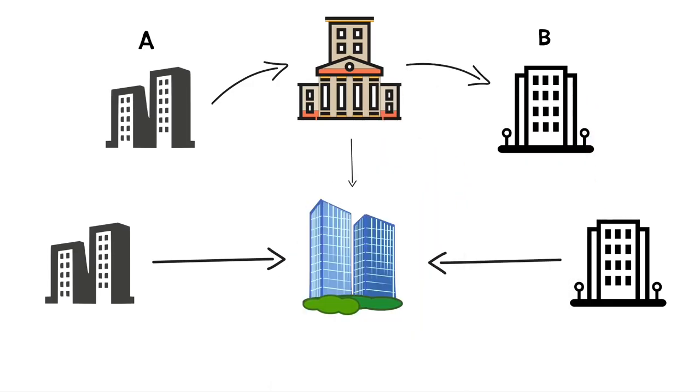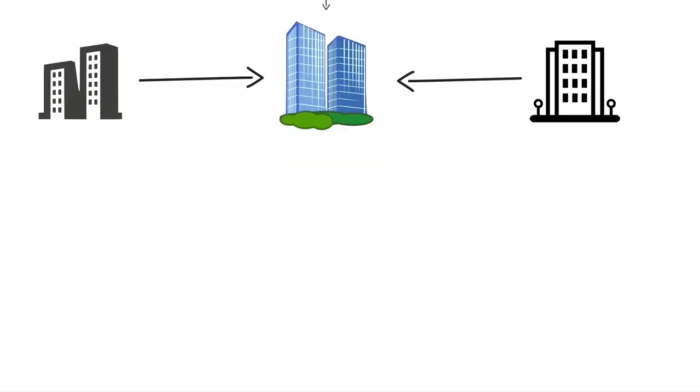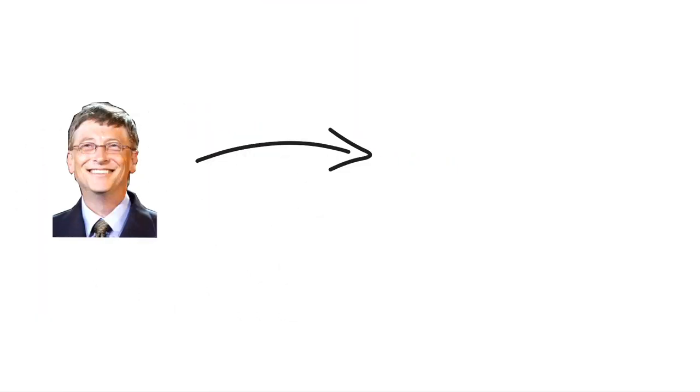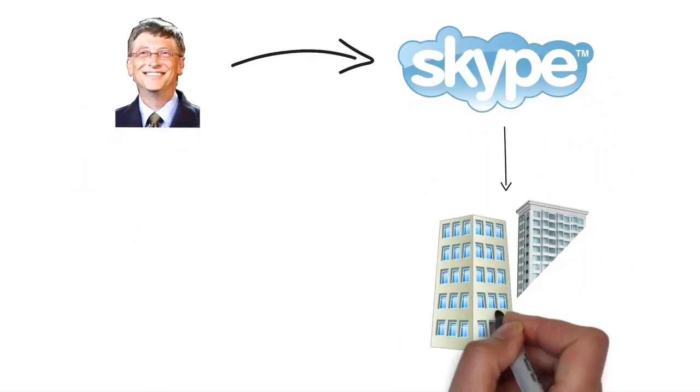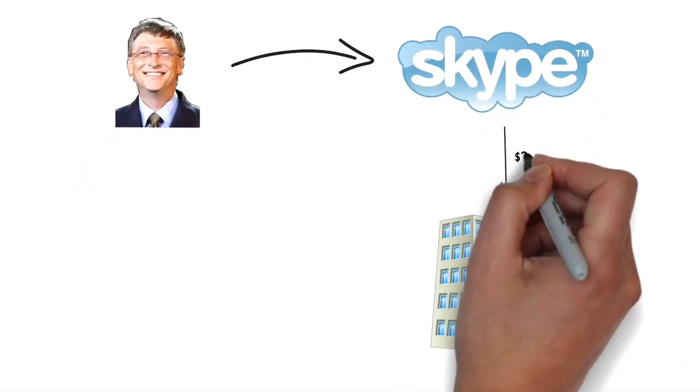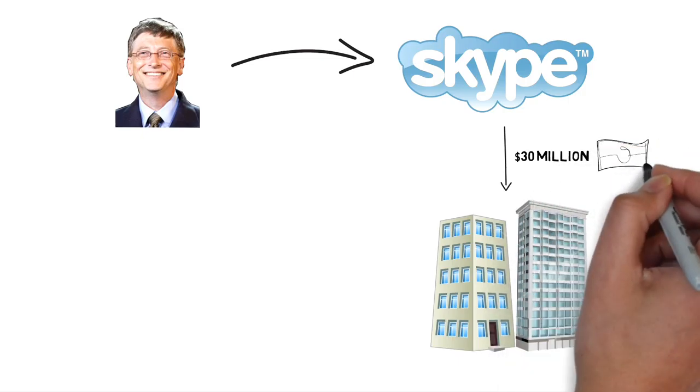In return, the bank gets 0.5 to 1% of the deal as a fee. In 2011, when Microsoft offered to buy Skype, Skype approached Goldman Sachs and JP Morgan Chase to help them get the right deal, paying $30 million in fees to them.